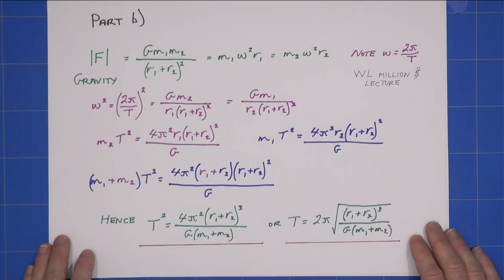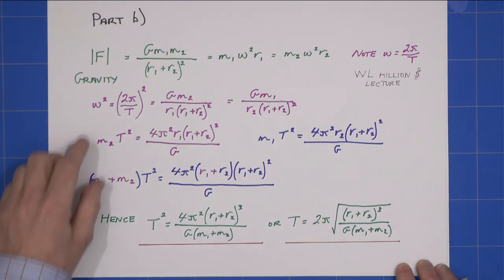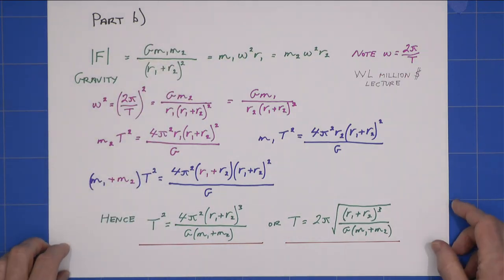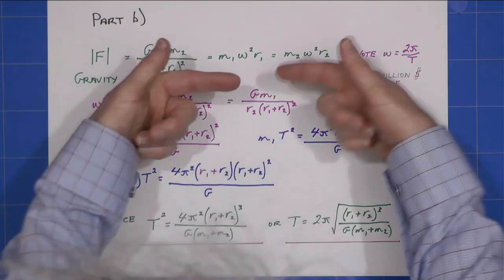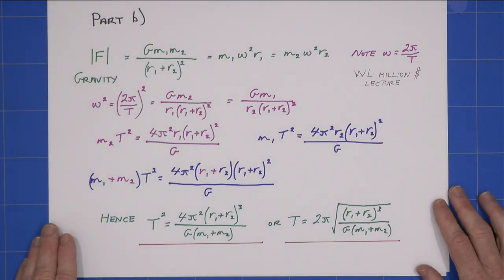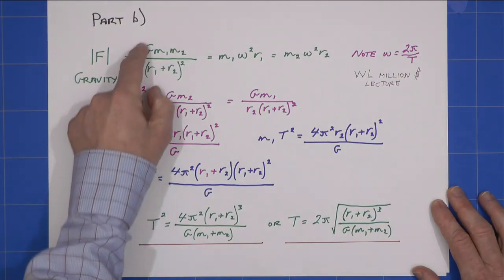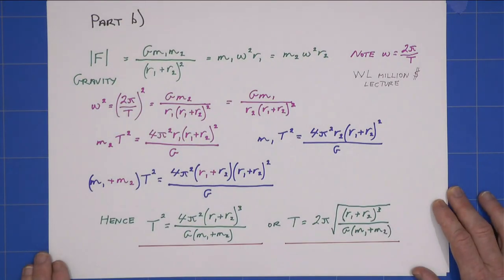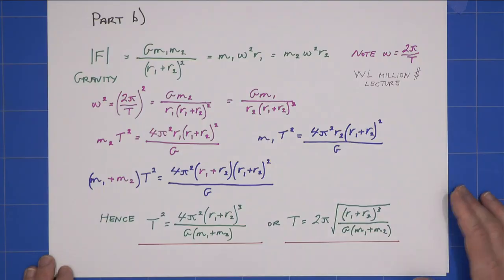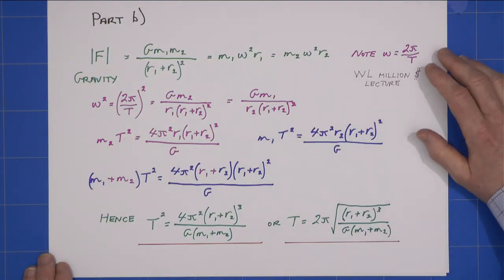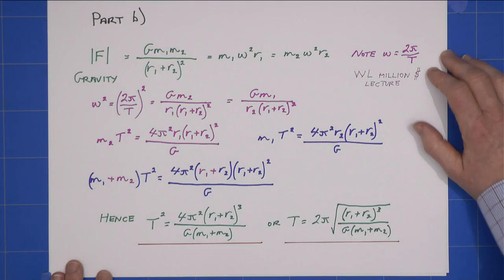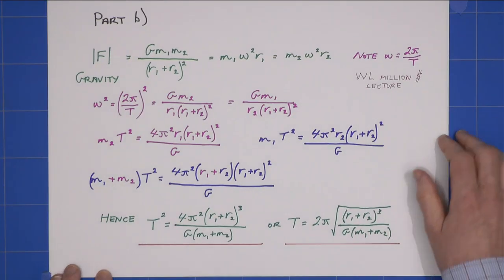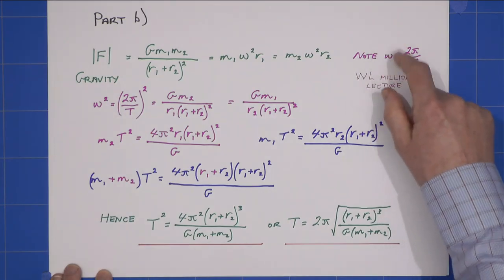For Part B, I now consider the magnitude of the gravitational force. As usual with these problems, the vectors are always acting radially, so I have this equals that. It must be the same for both stars, and note again that ω = 2π over the period.